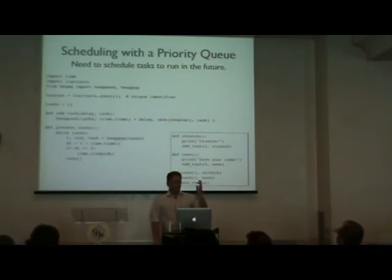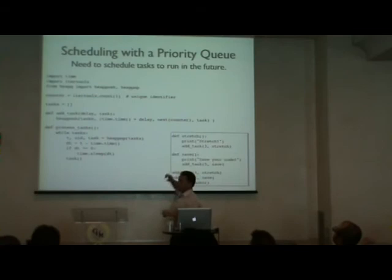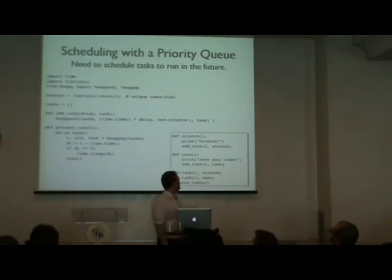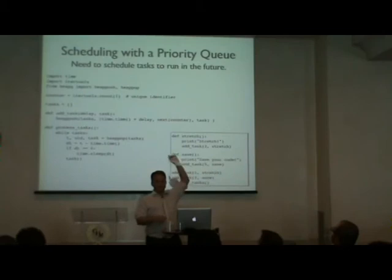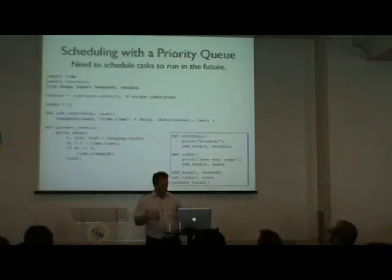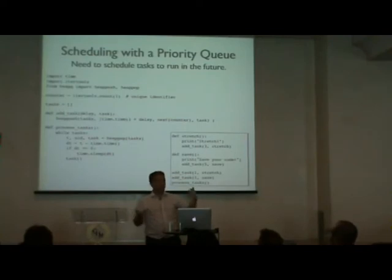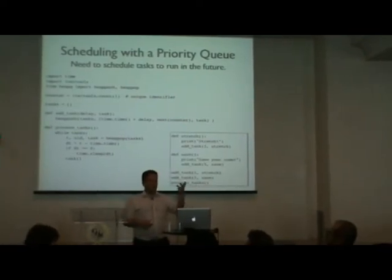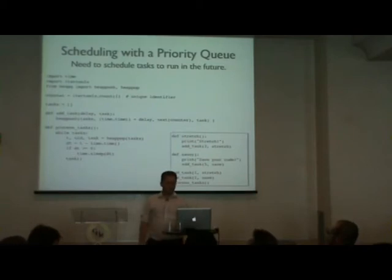Heaps are often used as priority queues. For example: you have tasks, one running every three seconds to remind you to stretch, another every five seconds to remind you to save your code. You schedule stuff in the future, maintain a priority queue ordered by time until the task runs, check the top element to see how long until it fires, sleep that duration, wake up, and process the task.